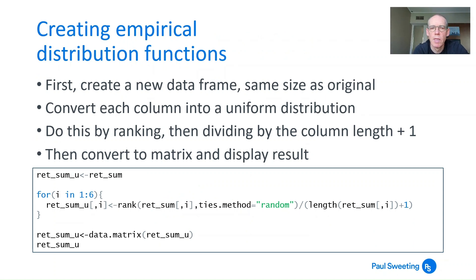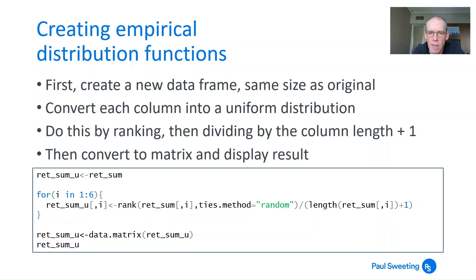We've got this data frame and we then need to get empirical distribution functions from it. We've got a whole load of returns — the returns are the marginal distributions — but when you're looking at a copula, you're working with something that has the univariate distributions stripped out, converted to a uniform distribution. So we need to create those uniform distributions from the original data. There are a few ways of doing this in code, and a few ways of creating the uniform distribution as well.